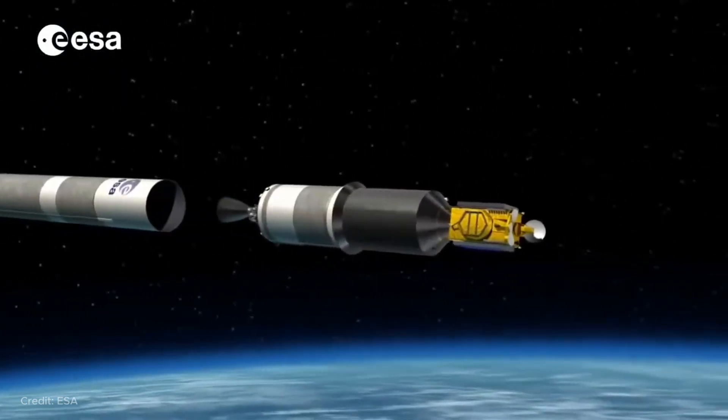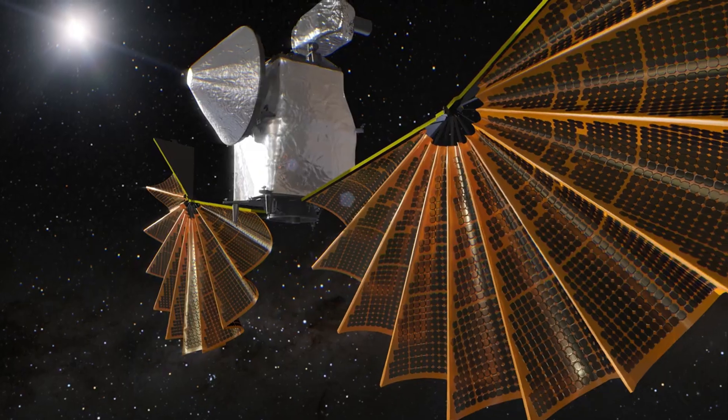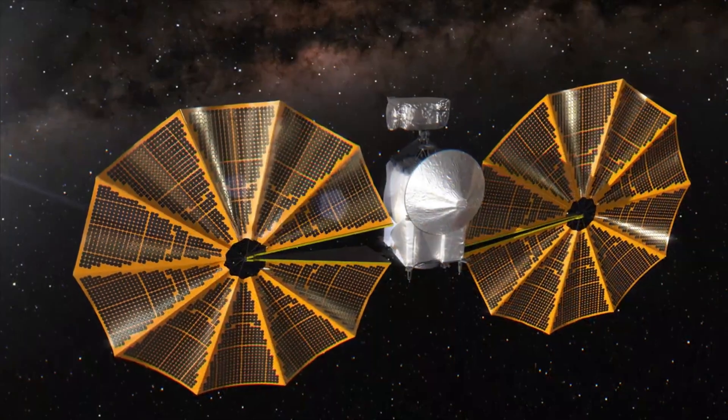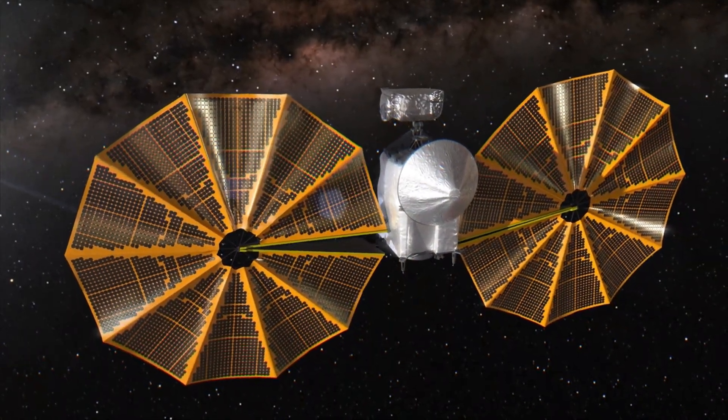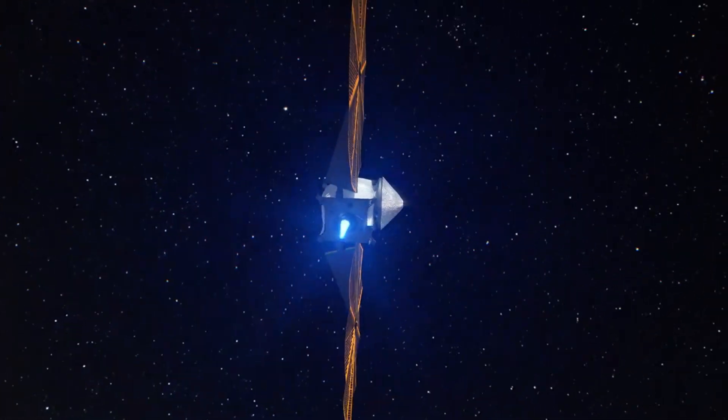Several space observatories operate today at the Lagrange point L2, observing in the infrared, decimeter, and millimeter ranges of the spectrum. When the Earth is a hindrance and the Sun is a hindrance, you need to be farther from them, but still not lose contact with Earth.